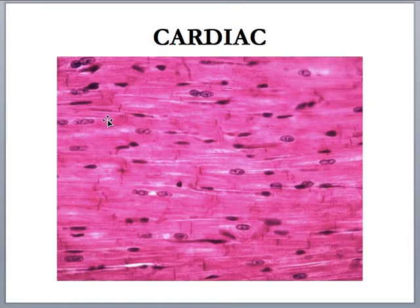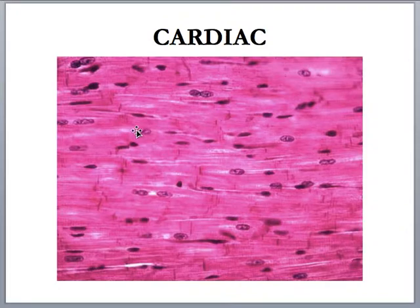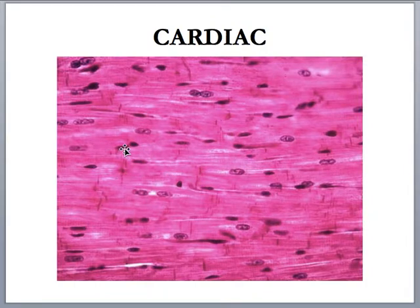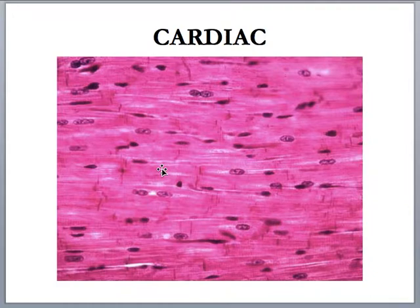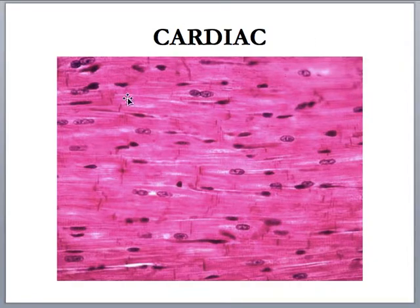Cardiac muscle also has striations just like skeletal muscle. But in cardiac muscle, the muscle fibers are uninucleate, meaning one nucleus per muscle fiber. And you see these darker striations — those more bold, darker striations are intercalated discs. Cardiac muscle is found in the heart, in the walls of the heart. Cardiac referring to heart.